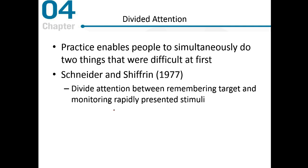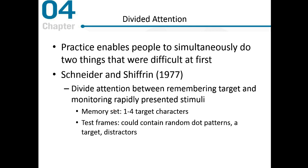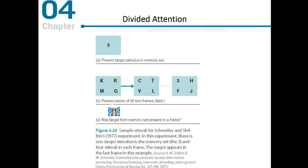In their experiment they had something called a memory set, and I'll show you a picture of that in a minute, that contained between one and four target characters. Then they flashed on a screen these test frames, and these test frames could contain random dot patterns, a target word, or distractors, and it was up to the participant to indicate which of these test frames included this target character.